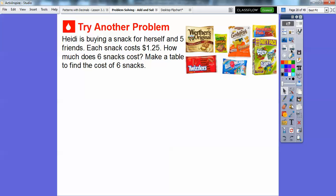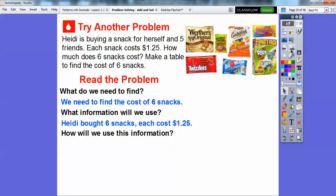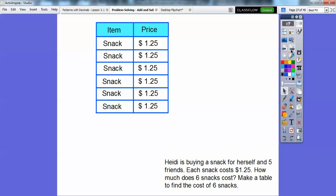Here's another one. Heidi is buying a snack for herself and five friends. Each snack costs $1.25. So how much does six snacks cost? We'll make a table to find the cost of six snacks. Let's read the problem. What do we need to find? We need to find the cost of those six snacks and they're $1.25 each. What information are we going to use? She bought six snacks and each cost $1.25. We'll make another table to find the cost of the six snacks here.